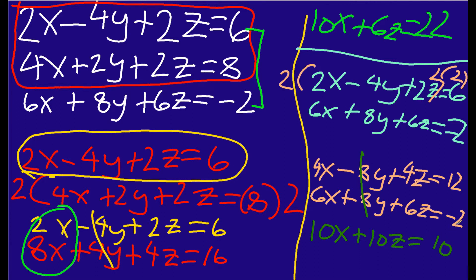We were able to eliminate the Y. Now we have two equations that each have two variables, so we can solve a regular system of equations. We have 10X plus 6Z equals 22, and 10X plus 10Z equals 10. In the next step we take these two equations. Let me move to another screen.